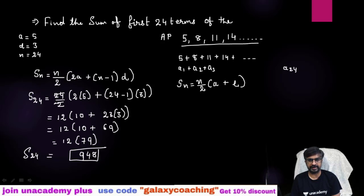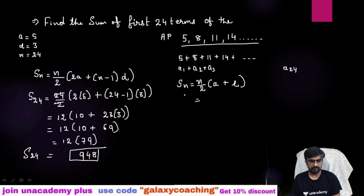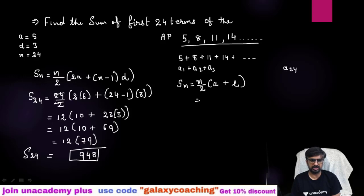Here we cannot use the shortcut formula — why? You can see we have n and we have a, but here we need l, which means the last term, that is the 24th term. We are not given the 24th term, that's why we cannot use this shortcut. In 90% of questions you have to use the main formula.